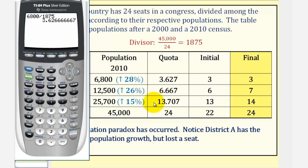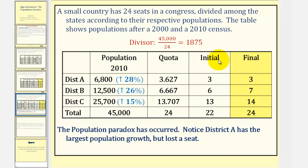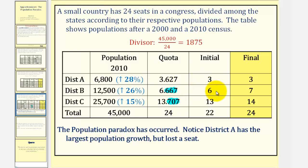We do the same for districts B and C. For the initial allocation of the lower quota, we take the quotas and remove the decimal part. Notice A receives 3, B receives 6, and C receives 13. But this sum is 22, so we have 2 extra seats to allocate. Those go to the states with the largest decimal values of their quota. Districts B and C have the 2 largest decimal parts, so district B and district C each receive an extra seat. The final allocation is 3, 7, and 14, giving a total of 24 seats.